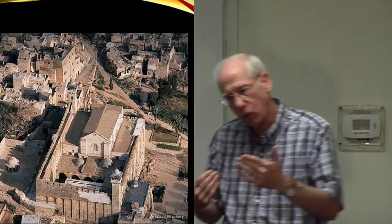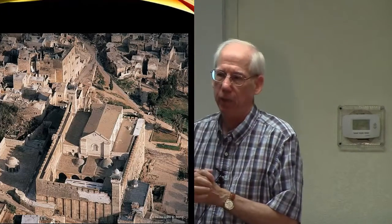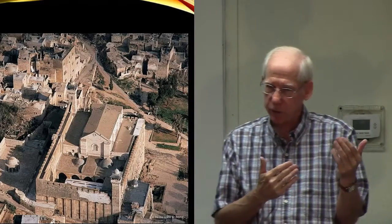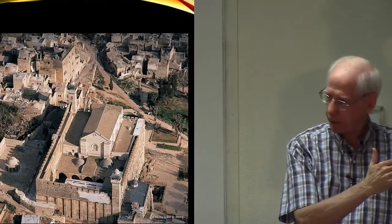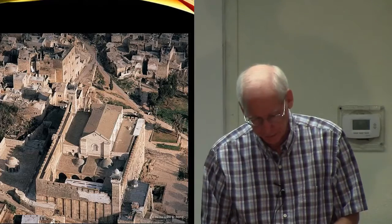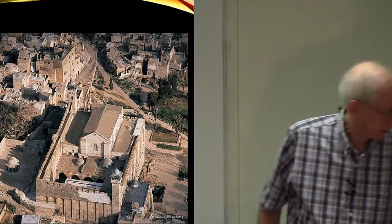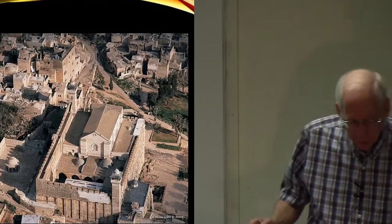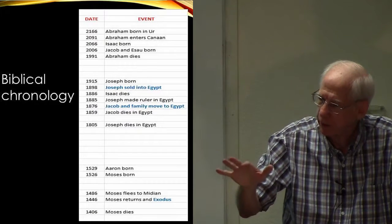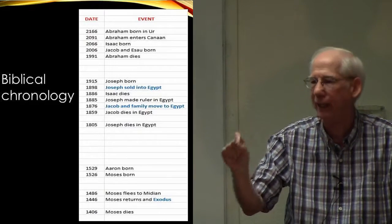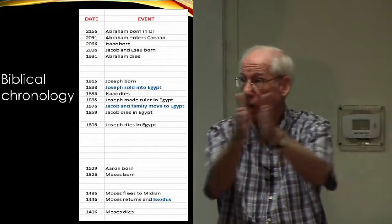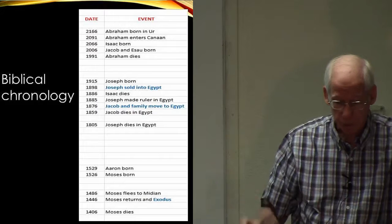The next long section I want to talk about is Israel's sojourn in Egypt — from when Jacob and the family moved there in 1876 B.C. until the Exodus in 1446 B.C. These chronologies can be confidently dated because you have certain securely dated anchor points that allow you to establish absolute dates and work from there.